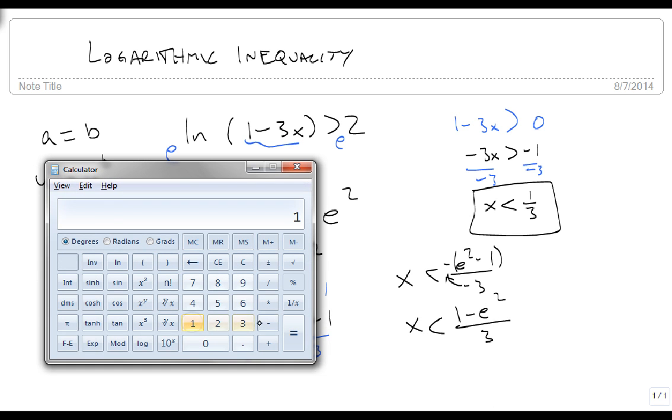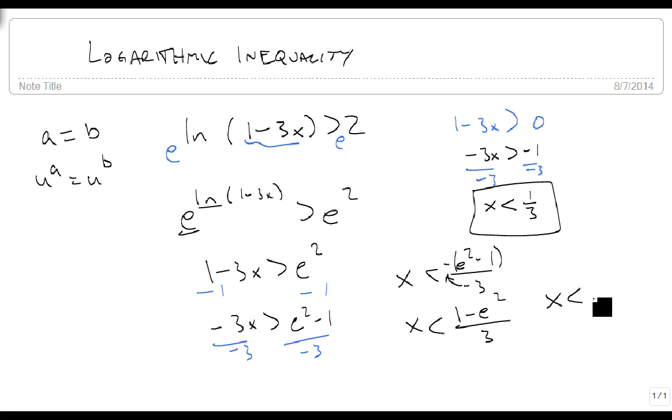So we get out our calculator. 1 minus e squared divided by 3 means that x needs to be less than minus 2.129.